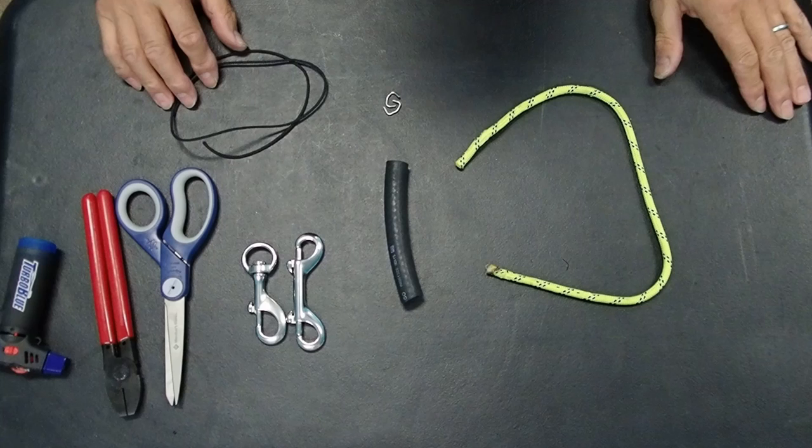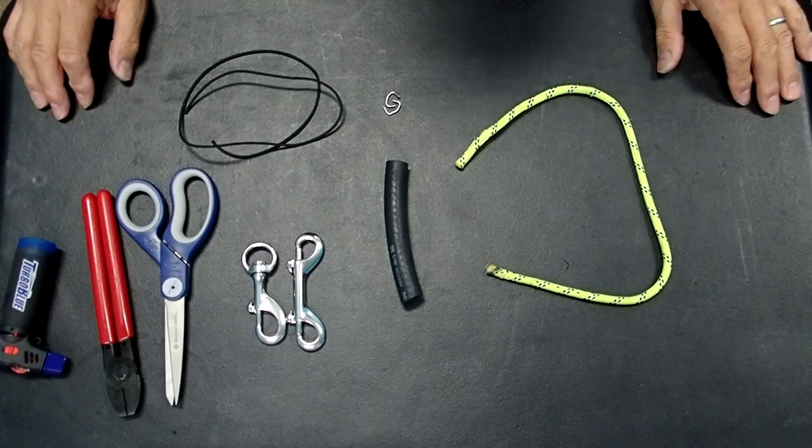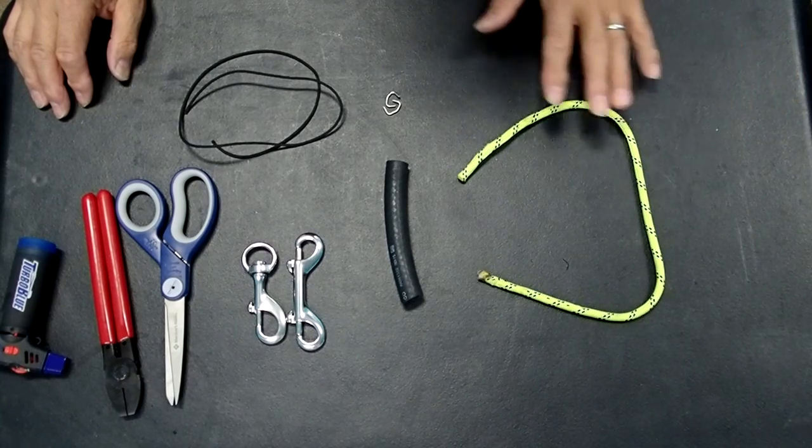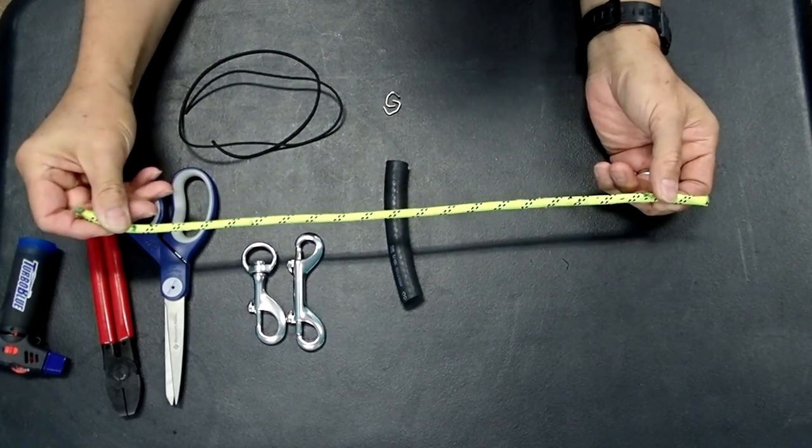Alright, so what we're going to talk about here is assembling a tank leash. So you're going to need several different components, you're going to need to use some line.